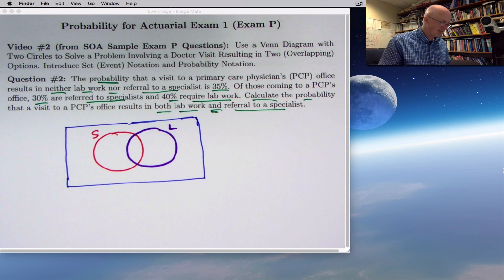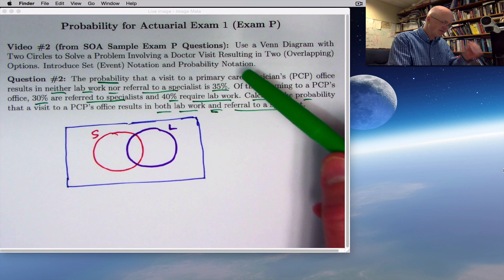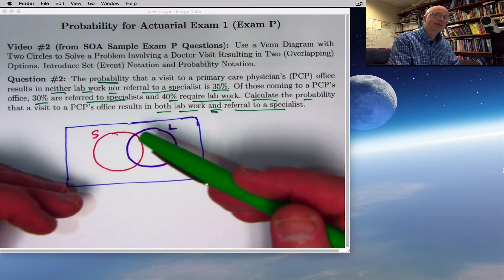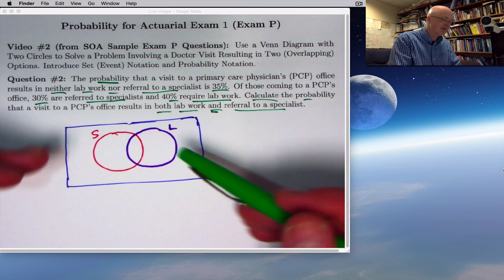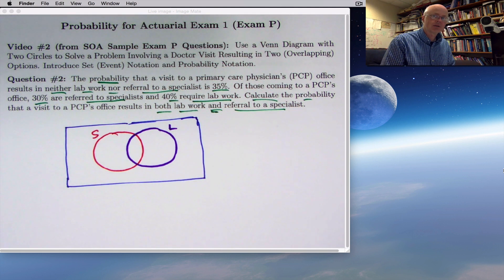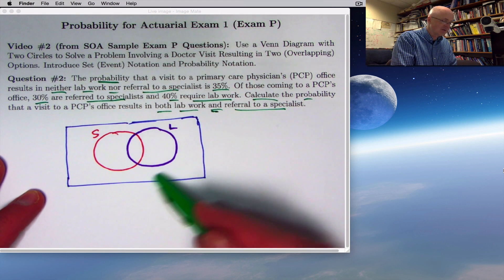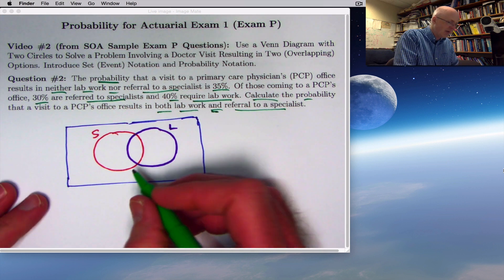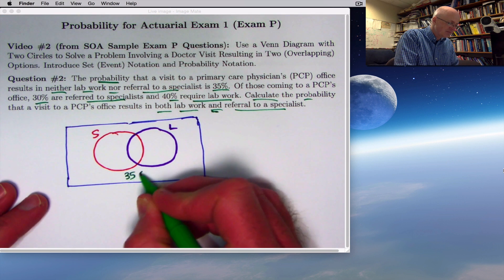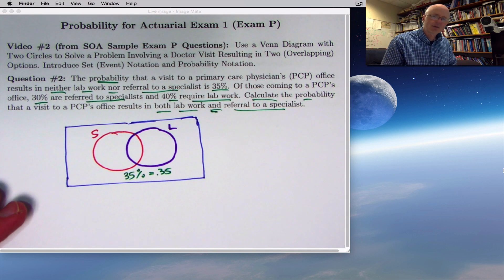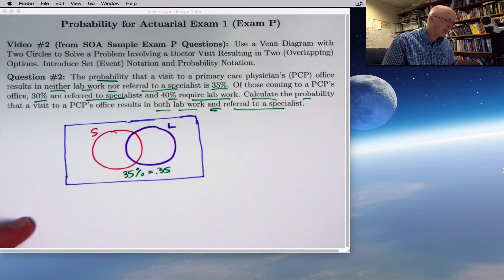Let's solve the problem now. Start with the first piece of information. Neither S nor L means not S and not L. You're both outside the red circle and outside the purple circle, in this region out here. You could label that with 35% or 0.35. 35% means 35 per 100. Percent means per 100. 35 over 100, that fraction is 0.35.